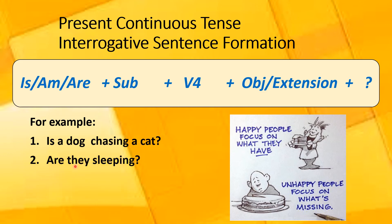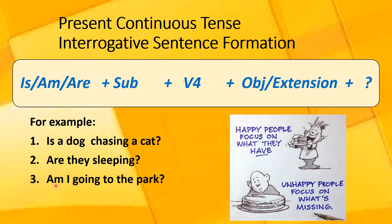Your second sentence was: they are sleeping. You will interchange the positions of the auxiliary verb and the subject, and your sentence would look like this: Are they sleeping? Your third sentence was: I am going to the park. Again, you replace or interchange the positions of the subject and helping verb, and the rest of the sentence remains the same. Your sentence would become: Am I going to the park?